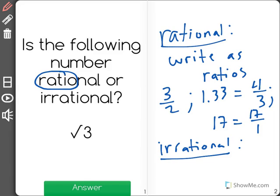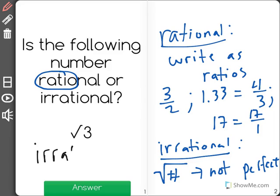So irrational numbers are square roots of numbers that are not perfect squares. For example, the square root of 4 would be 2 because 2 times 2 is equal to 4. But the square root of 3, we can't find 2 numbers to multiply to equal 3. So this is an example of an irrational number.